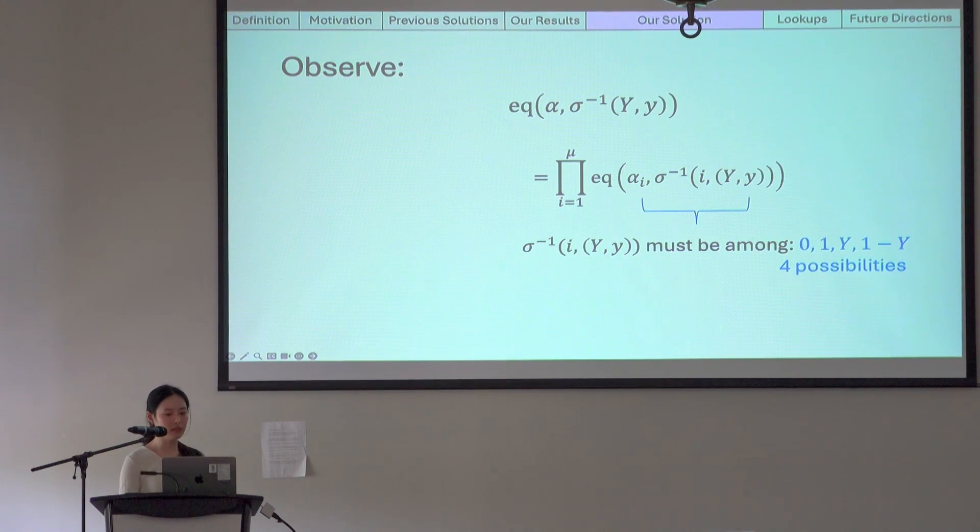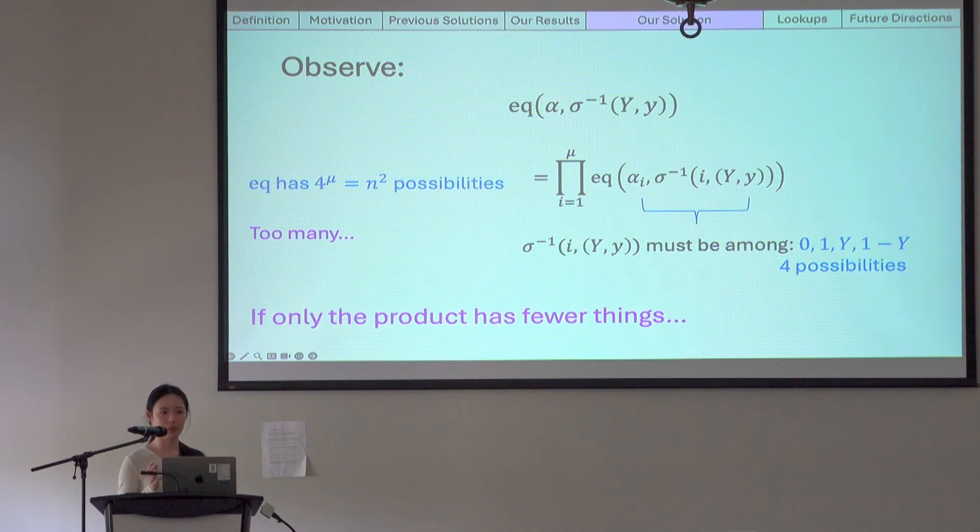This implies that EQ has 4 to the mu, which is n squared total possibilities. Well unfortunately this is obviously way too many buckets to work with, because there are too many terms in the EQ product. It would be great if the product has fewer things. So say if the product only has p things, then the EQ only has 4 to the p possibilities.